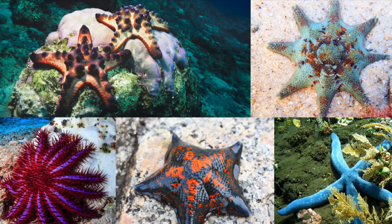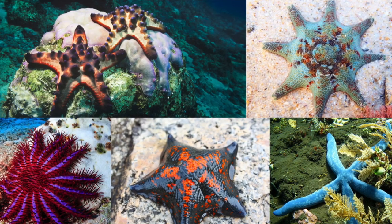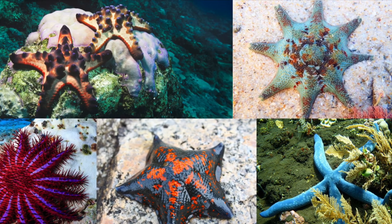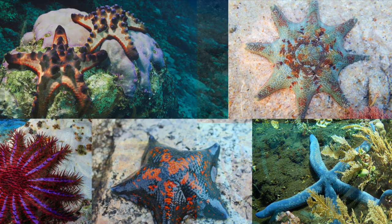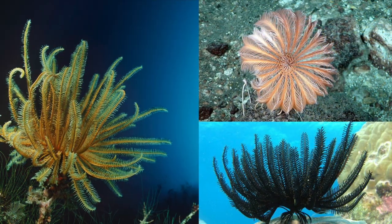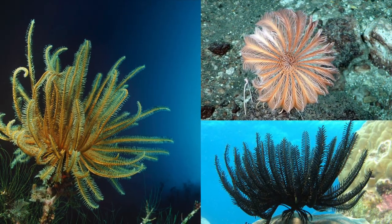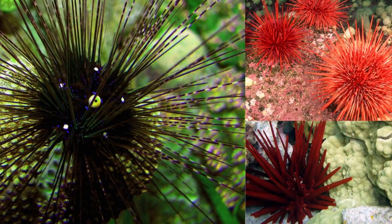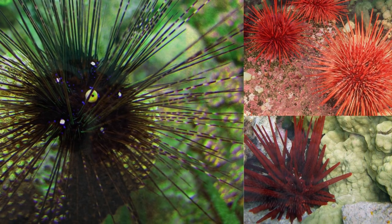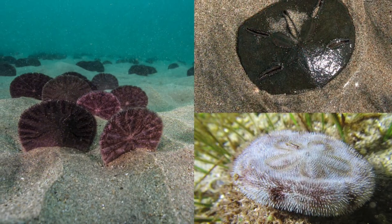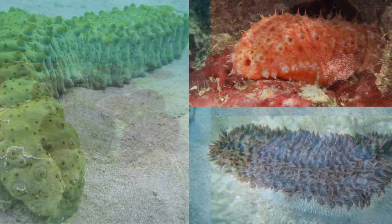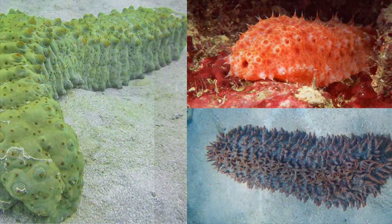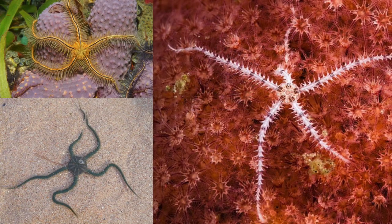The phylum Echinodermata contains five classes of marine life: sea stars, sea lilies and feather stars, sea urchins and sand dollars, sea cucumbers, and basket and brittle stars.